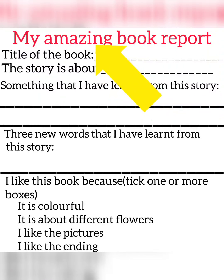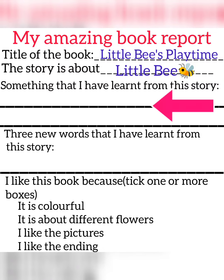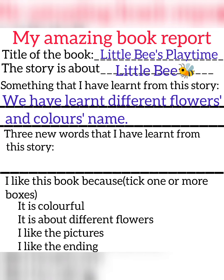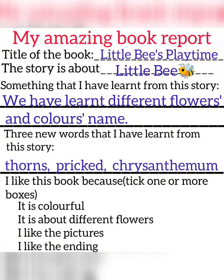Now the last section — my amazing book report. Title of the book: Little Bees Playtime. The story is about Little Bees. Something that I have learned from this story: we have learned different flowers and color names. Three new words learned from this story: Thorns, Pricked, Chrysanthemum.